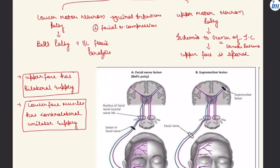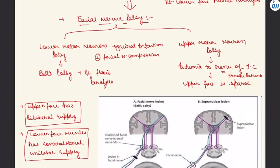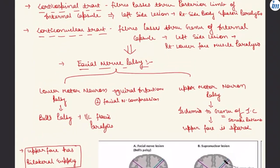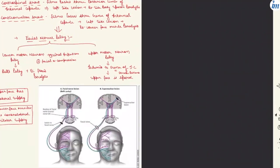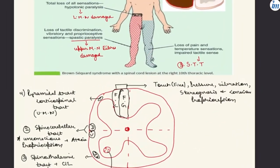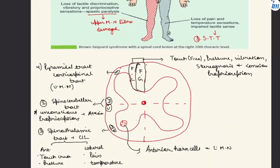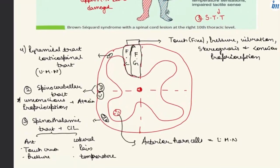In summary, facial nerve palsy can be due to upper motor neuron palsy or lower motor neuron palsy. The corticonuclear tract fibers always pass through the genu of the internal capsule, since the corticonuclear tract controls the muscles of the face and eye.